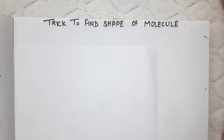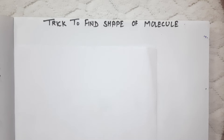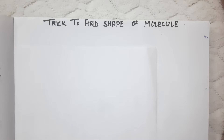Welcome students. Today in this session we are going to study a super trick to find the shape of a molecule. The shape of a molecule can be categorized into two headings: one is with lone pairs and one without lone pairs.